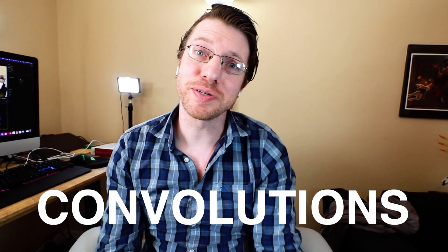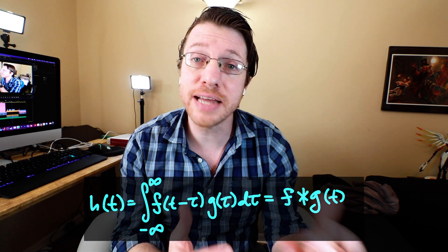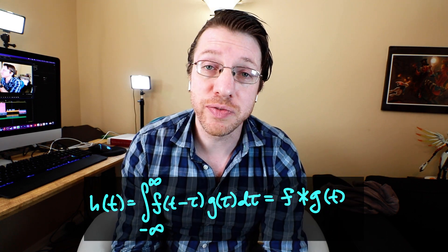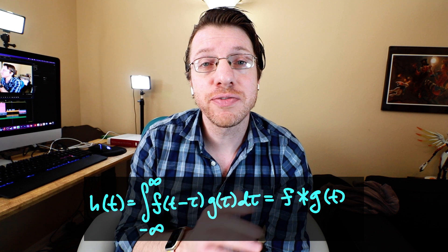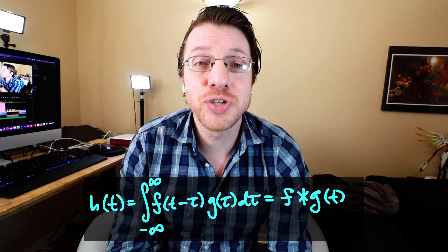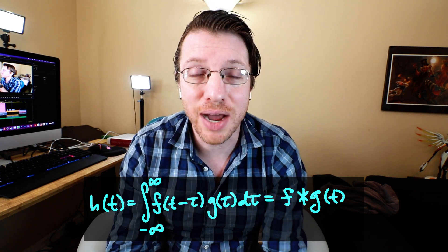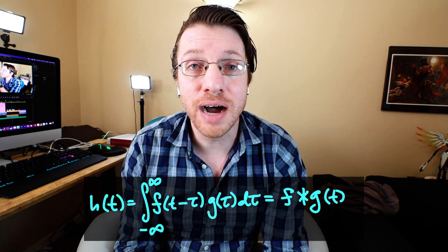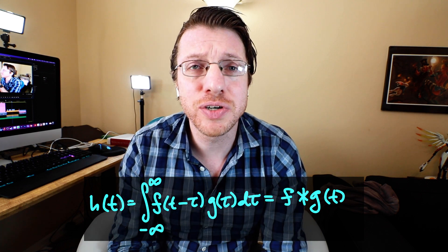Let's start with convolutions of functions. If you have two functions on the real line, their convolution is another function given as h(t) = ∫ from -∞ to ∞ of f(t - τ) times g(τ) dτ. This integral defines our convolution function and we write this as f★g.